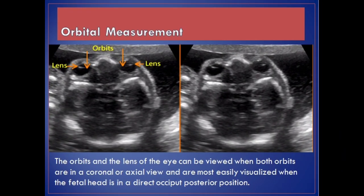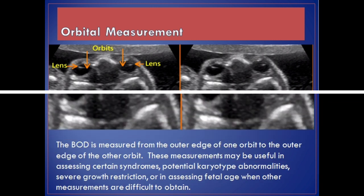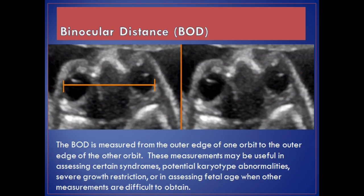Orbital measurement. The orbits and lens of the eye can be viewed when both orbits are in a coronal or axial view, and are most easily visualized when the fetal head is in a direct occiput posterior position. Binocular distance, BOD, is measured from the outer edge of one orbit to the outer edge of the other orbit. These measurements may be useful in assessing certain syndromes, potential karyotype abnormalities, severe growth restriction, or in assessing fetal age when other measurements are difficult to obtain.